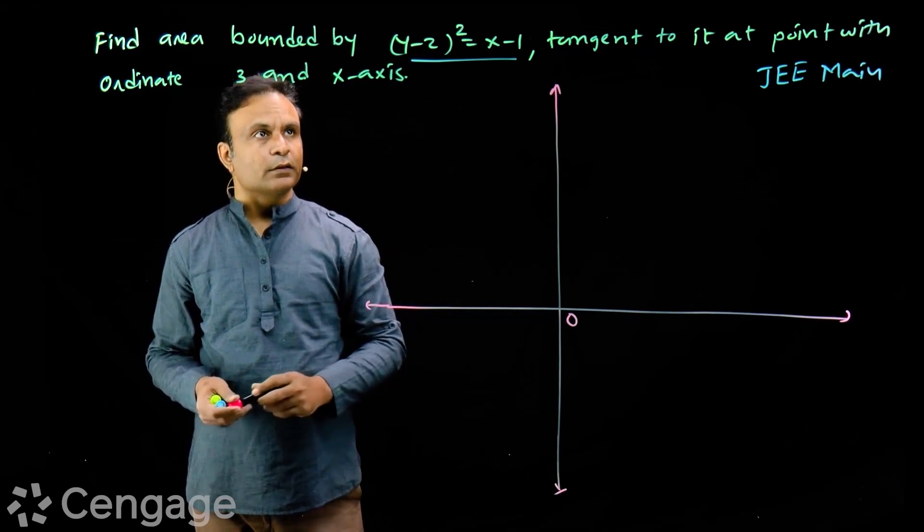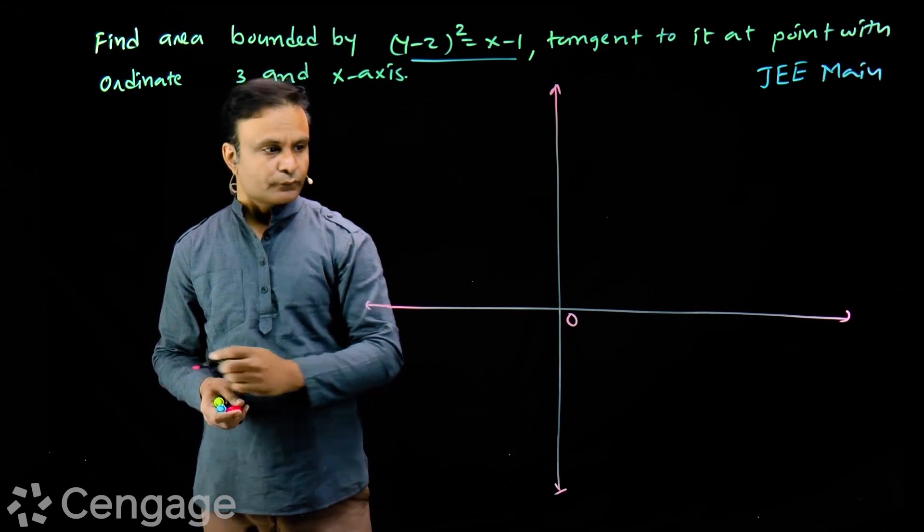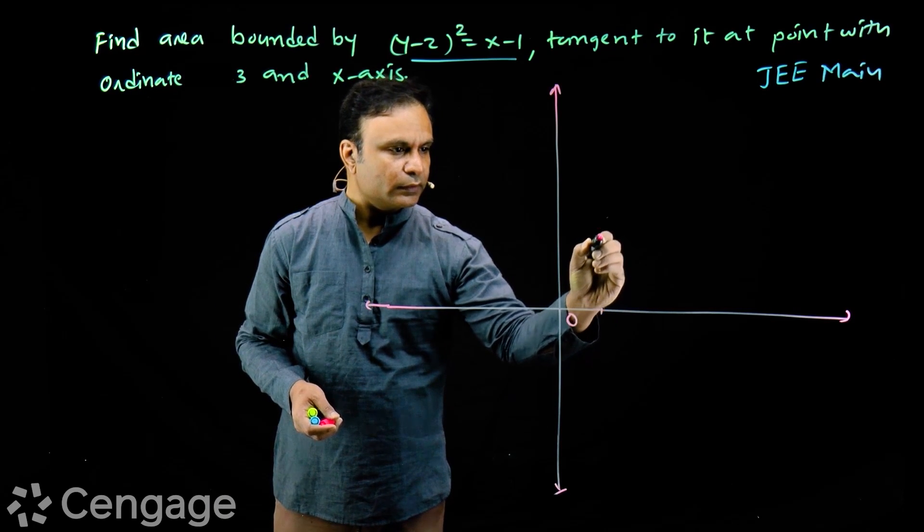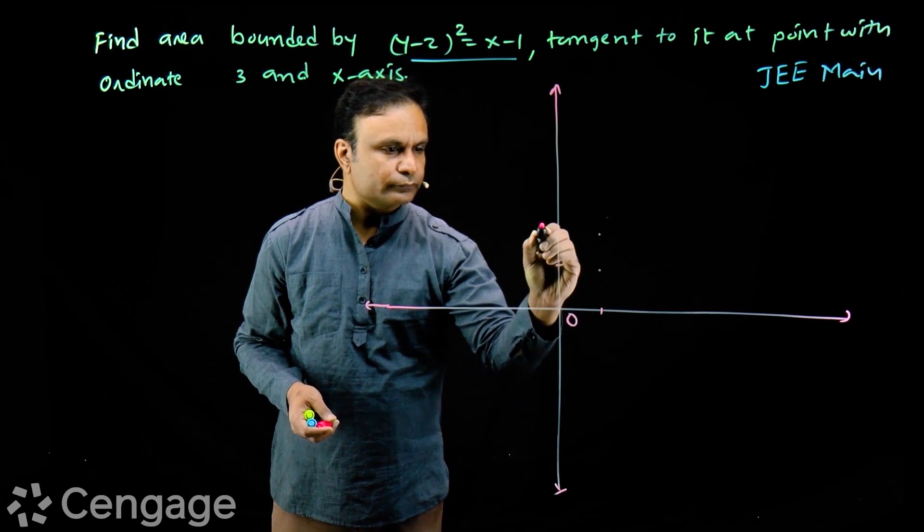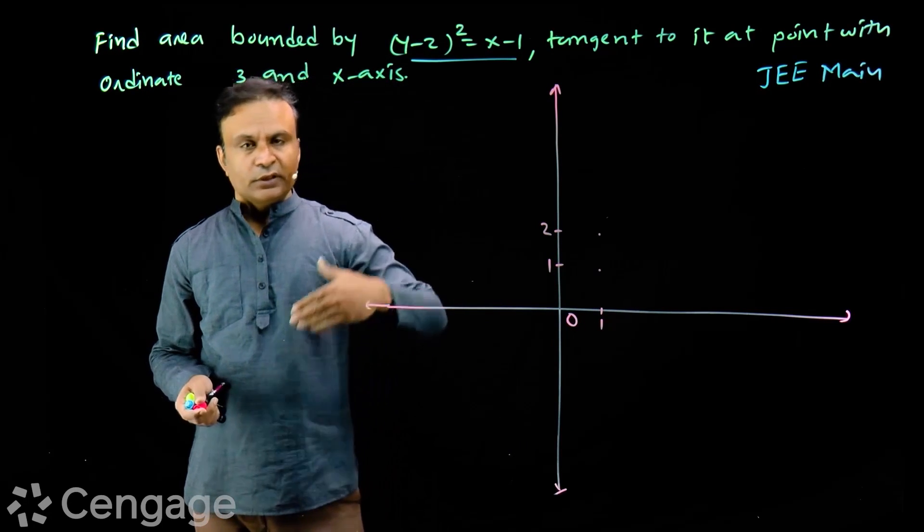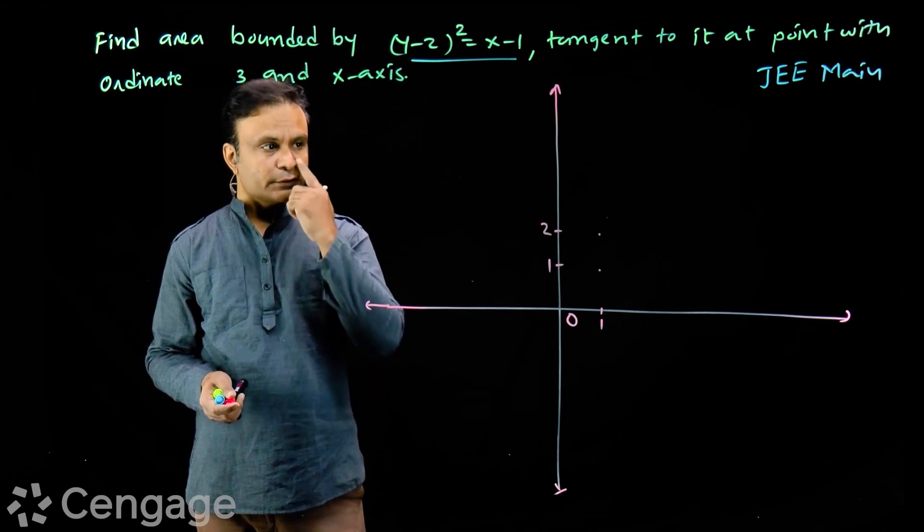We have this parabola whose vertex is (1,2). So we locate the point (1,2). The parabola will be concave towards right.